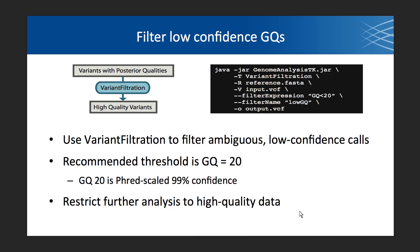The next step, which you might apply to an association study, is to filter ambiguous low-confidence calls. Many analysts at the Broad filter genotype calls below GQ20. GQ20 represents 99% confidence, and over a couple million variants in a call set, you don't want more than 1% of genotypes to be incorrect. This restricts downstream analysis to only the highest quality data.